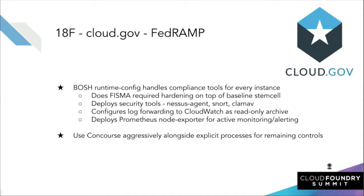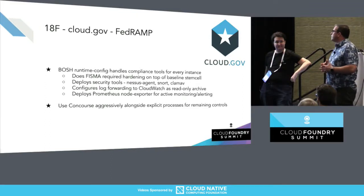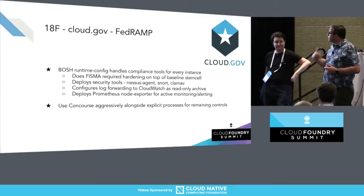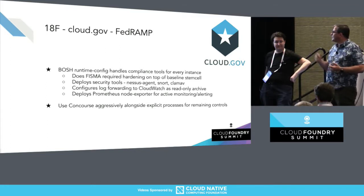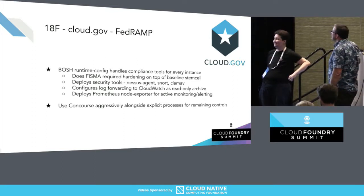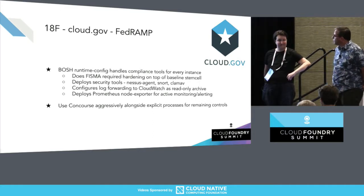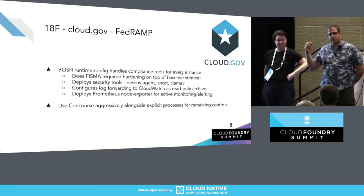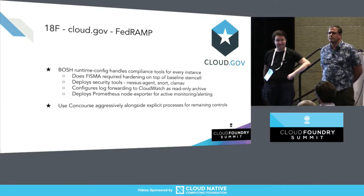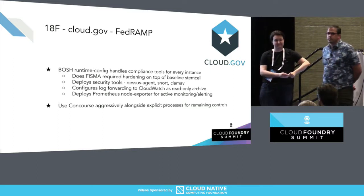As far as FedRAMP goes, we use the BOSH runtime config to handle host security, which FedRAMP and FISMA are very focused on. On your Diego cells and every other cell in your deployment, they want certain host security controls. We do some hardening on top of what's already done upstream in the project. We deploy a Nessus agent — that's the one non-open-source piece — as well as Snort and ClamAV. You might use OSSEC or other open source options instead. We've also configured all our log forwarding to go to CloudWatch to ensure a read-only archive, even though everything else goes through Log Search for Cloud Foundry. Everything is mirrored into CloudWatch for auditing, incident response — we have an immutable archive.